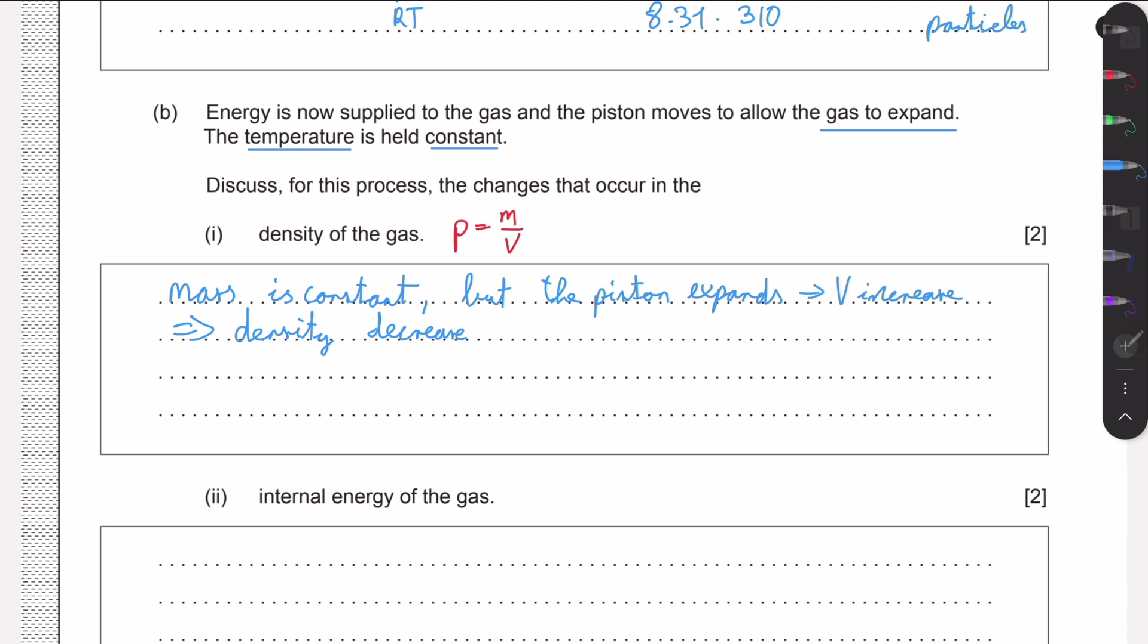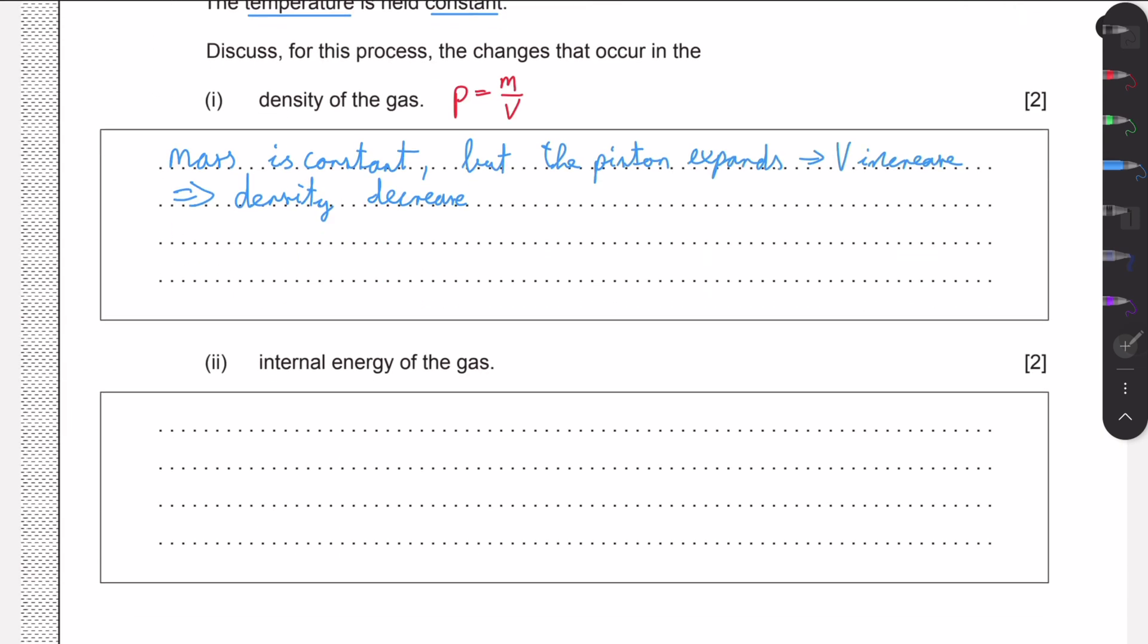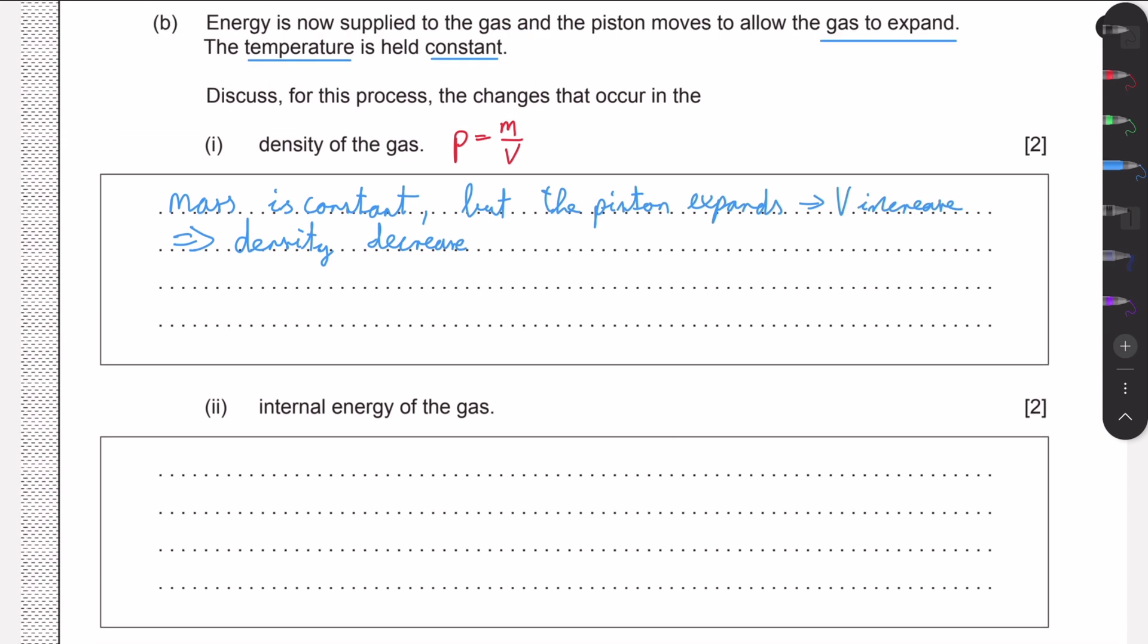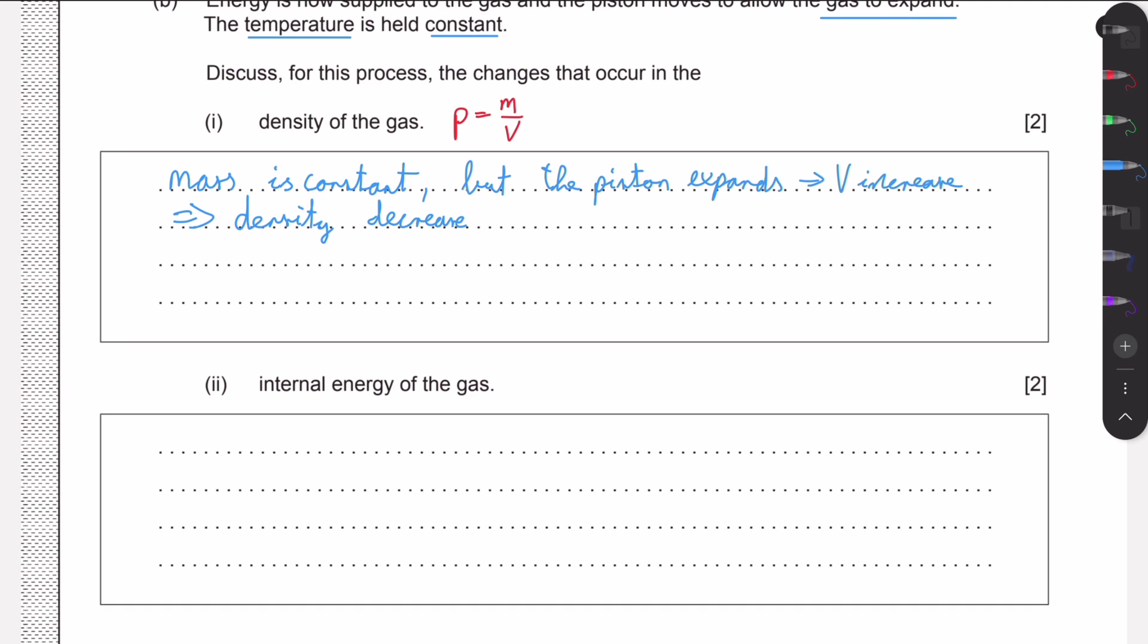And then in part two, we need to discuss the changes in internal energy of the gas. This should be pretty obvious to us: if the temperature is constant, the internal energy must also be constant.